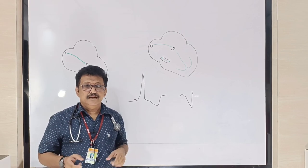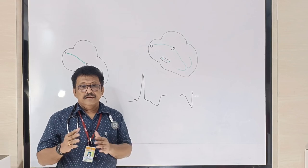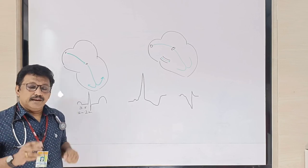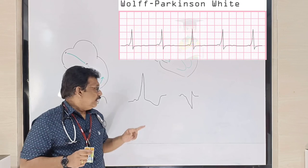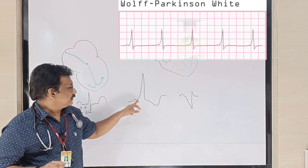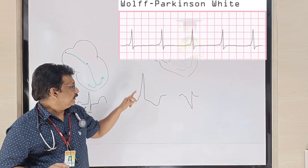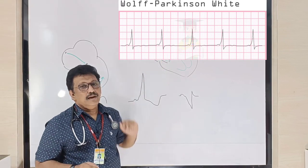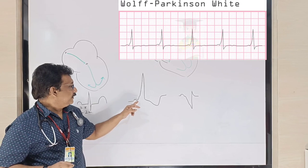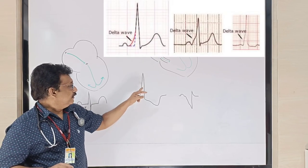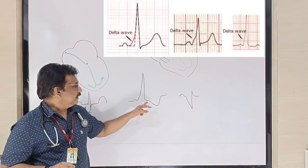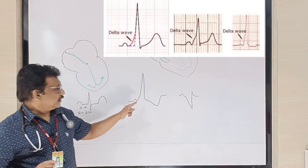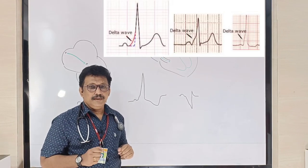We will first discuss WPW syndrome. Whenever you take an ECG and see a short PR interval along with a wide QRS complex with slurring of the upstroke of the R wave, that slurring is called a delta wave. The delta wave occurs because conduction passes through an accessory pathway. So in WPW syndrome: PR interval is short (less than three small squares), there is a delta wave, a wide QRS complex, followed by ST depression and T wave inversion. This is the classical finding and represents Type A WPW syndrome.